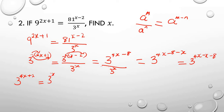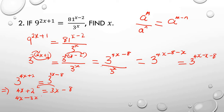On this side, simplified, it is 3 raised to the power 3x minus 8. Since the base here is 3 and this is also 3, the powers are equal, so 4x plus 2 equals 3x minus 8. Taking like terms together: 4x minus 3x equals minus 8 minus 2, giving x equals minus 10. So x is minus 10.